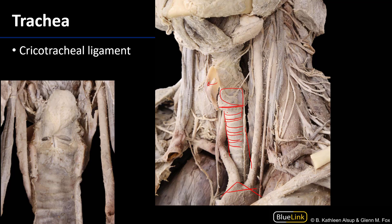If we look posteriorly on the left-hand side, we can see the bottom of the cricoid cartilage and probably our first cartilaginous ring anteriorly. Between the two, all the way around, is the cricotracheal ligament — the connective tissue that attaches the cricoid cartilage and the remainder of the larynx to the trachea.